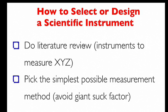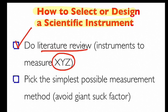So how do we go about selecting or designing a scientific instrument? I think the first thing is a literature review. If we want to measure X, Y, Z, there's many different ways to measure it, and people have figured this out, and our literature review will reveal the best ways to do this.